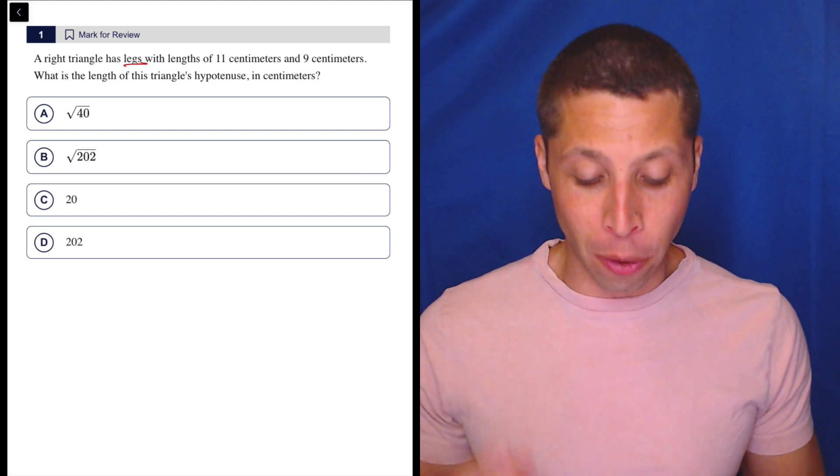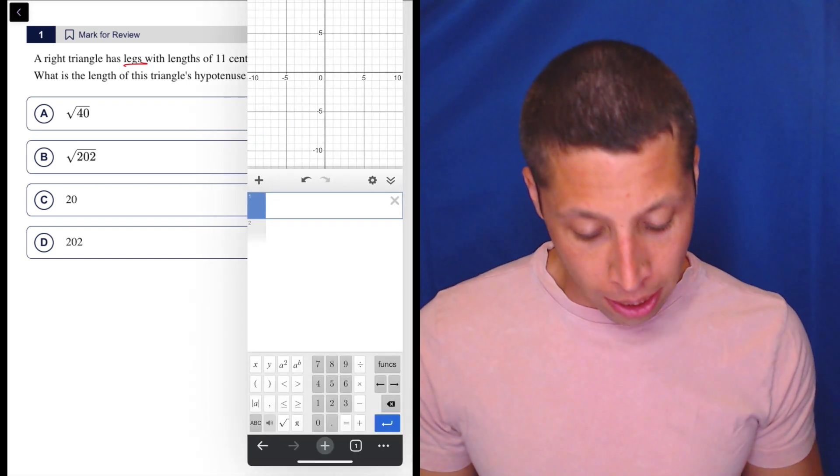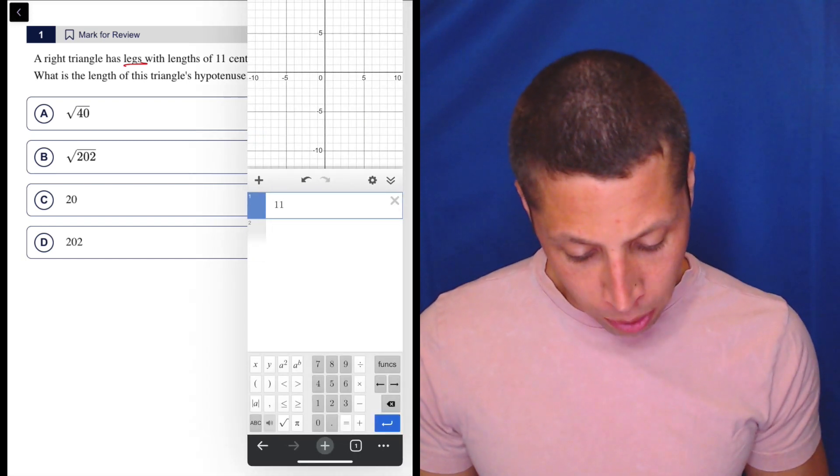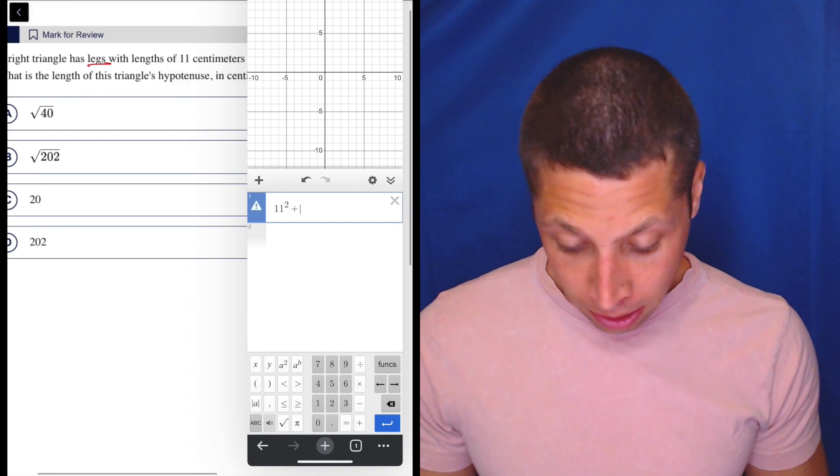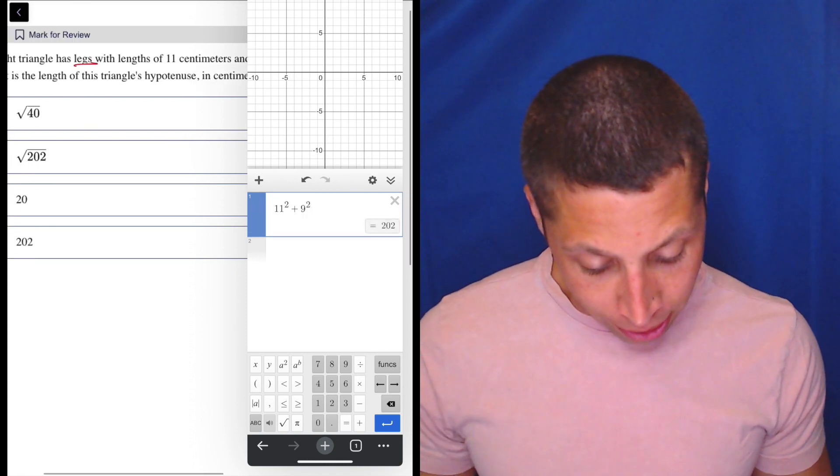You hopefully know that you're going to need to use Pythagorean theorem, so here I would just pull up Desmos, and let's do 11 squared plus 9 squared, and we get 202.